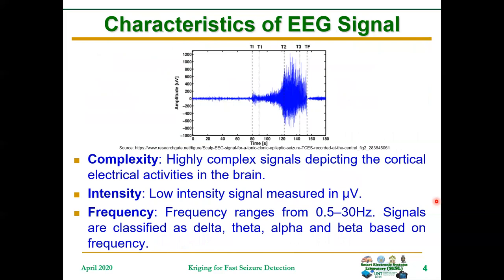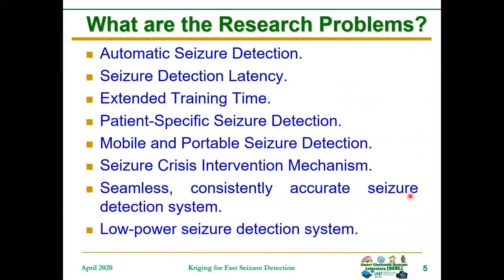These are the characteristics of EEG signals which are collected from the brain for the purpose of detecting seizures. Complexity is high, intensity is low in the order of microvolts, and frequency ranges between 0.5 and 30 hertz.